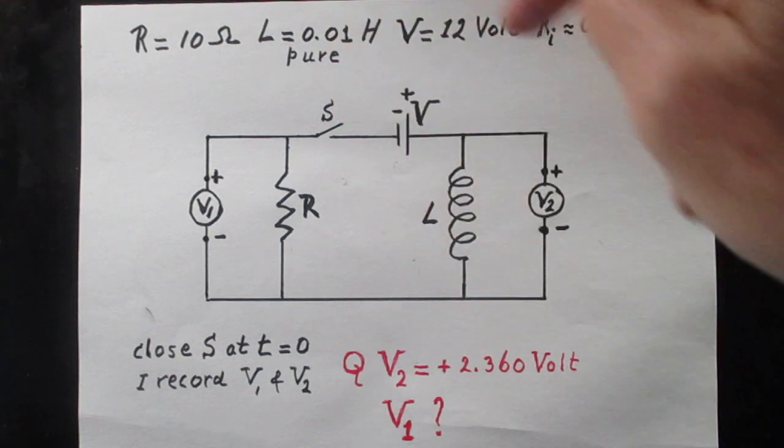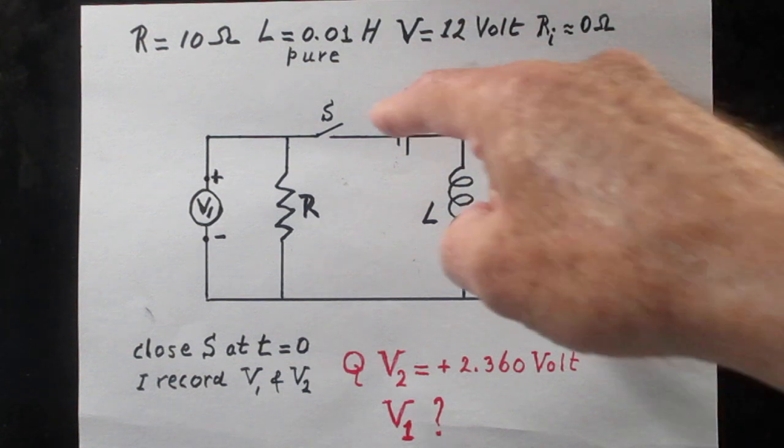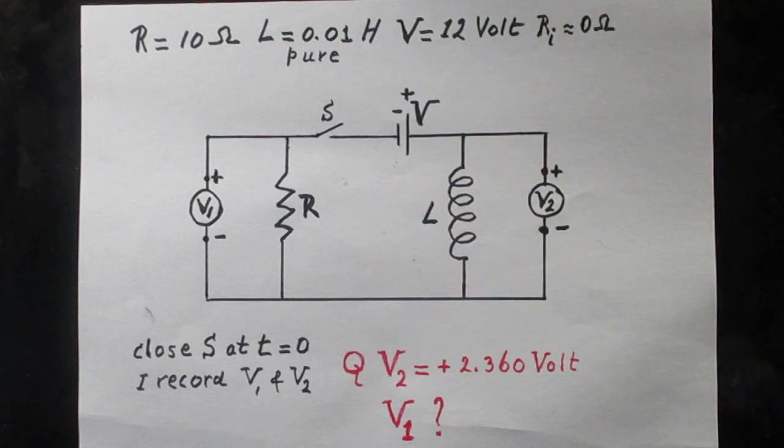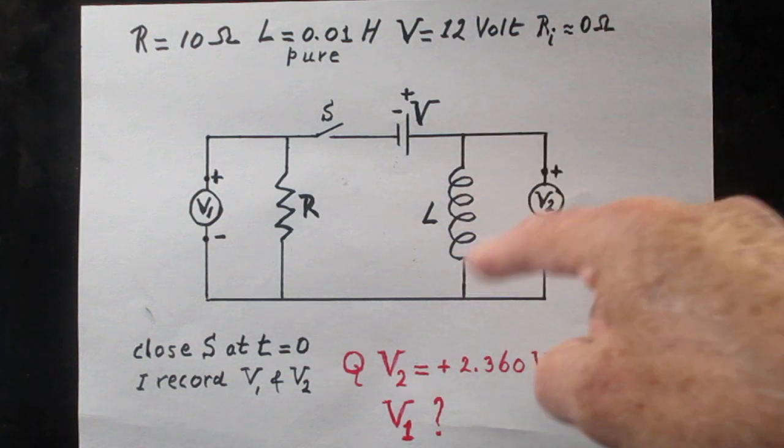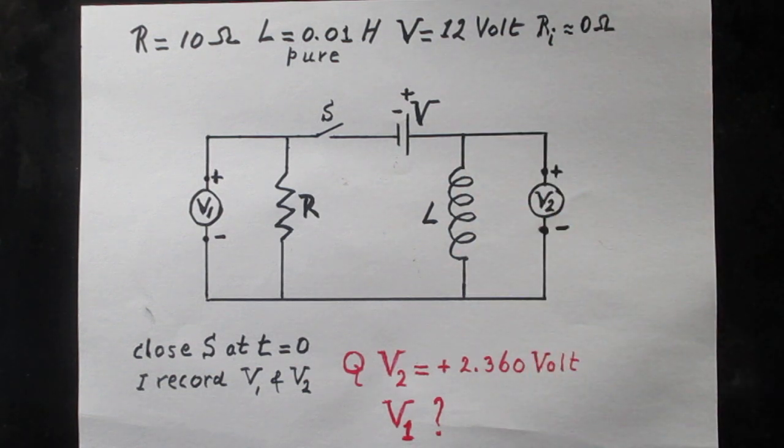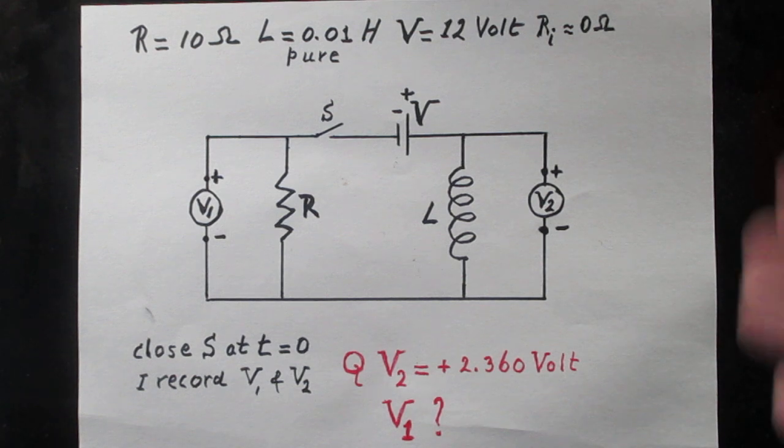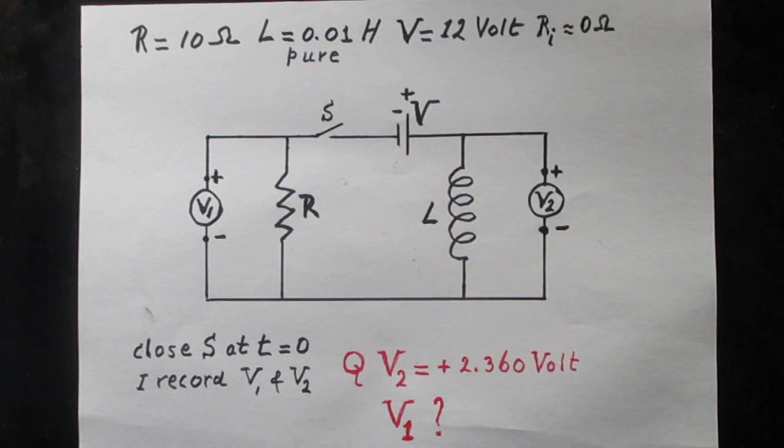At time t equals zero I close this switch S. And because there is a self-inductor here, of course the currents and the values of the voltmeters will change in time.